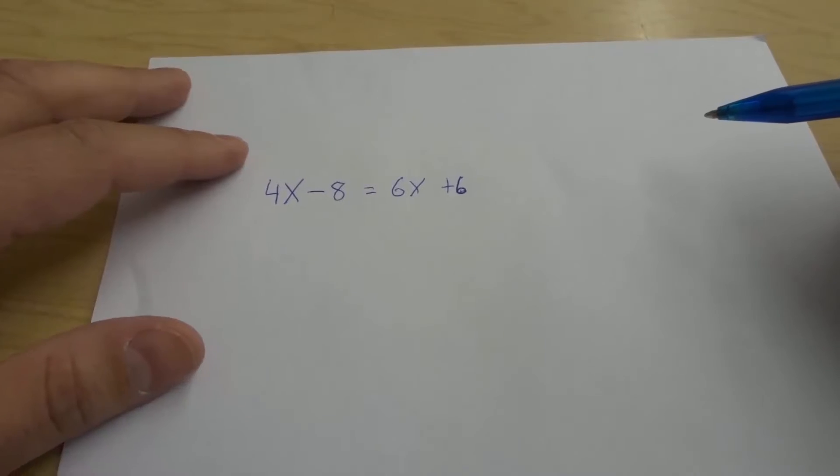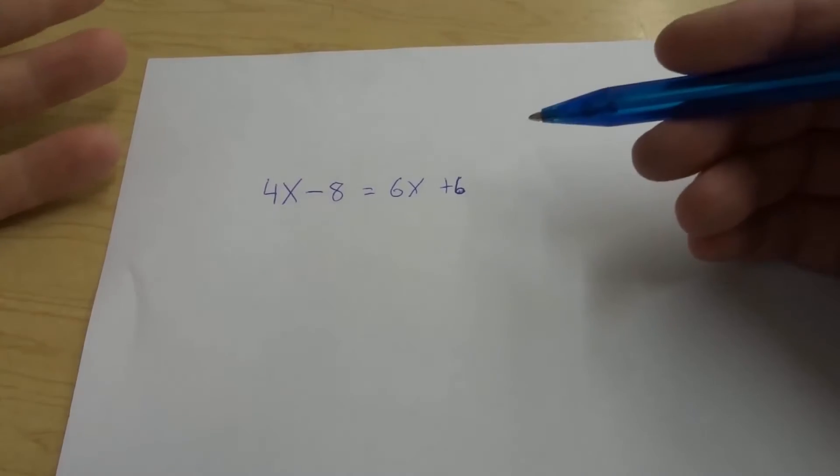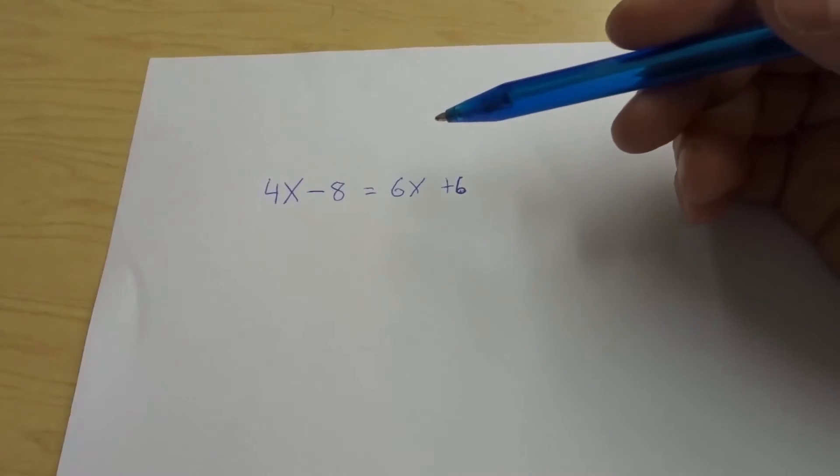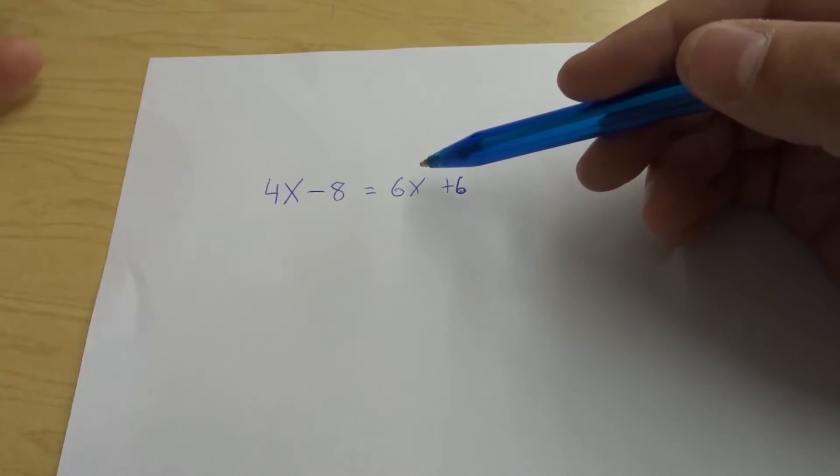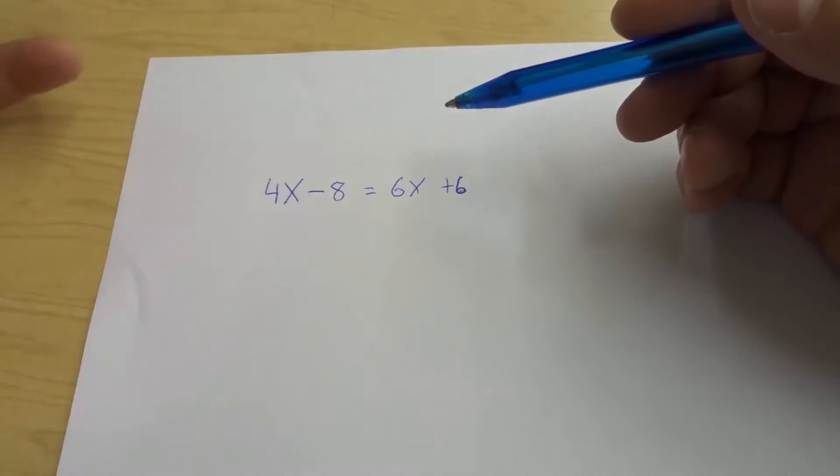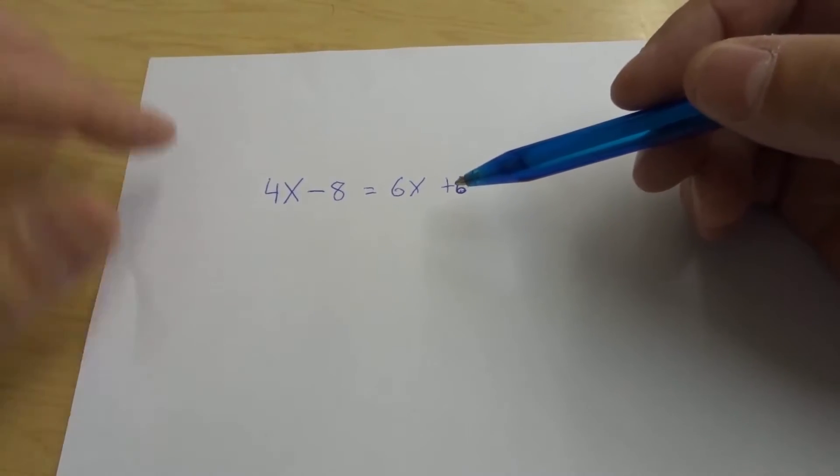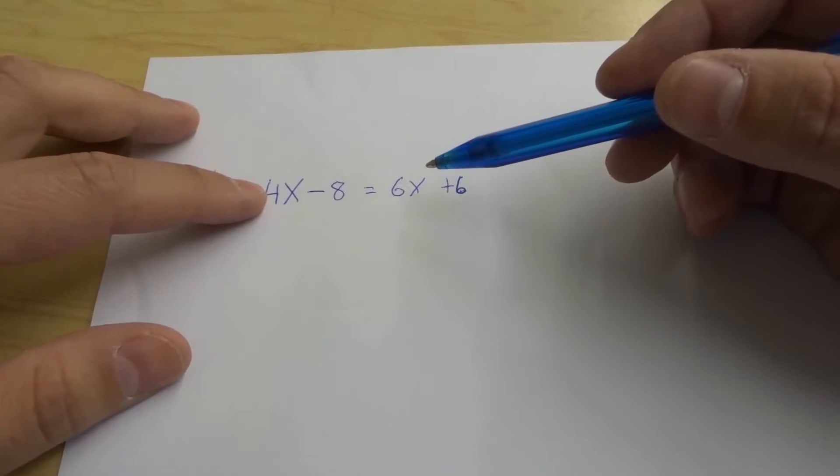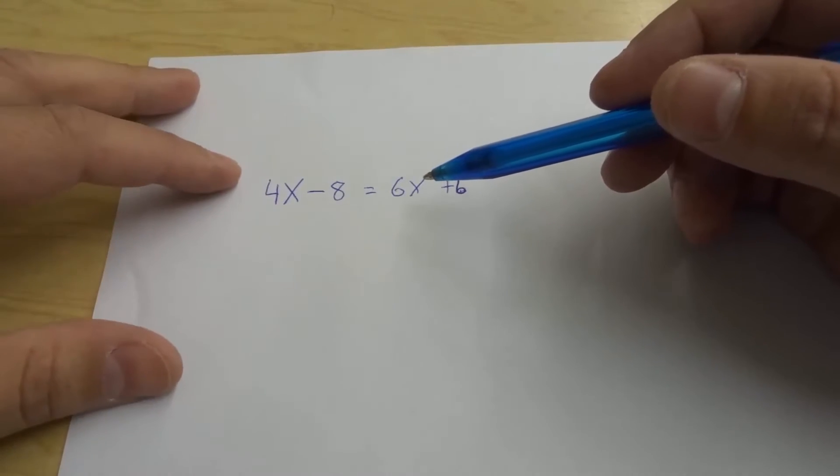Now the first thing that we want to do is we want to get the variables on one side. So we want to get rid of the variable on one side of the equation to leave only a variable on the other side. The easiest thing you can do is get rid of the smaller variable because it'll prevent you from getting a negative for the most part.